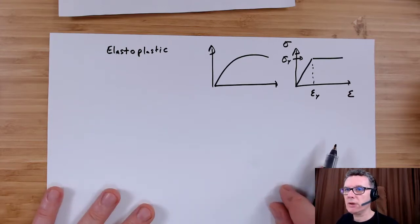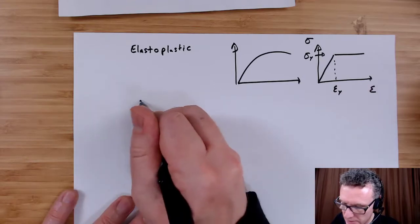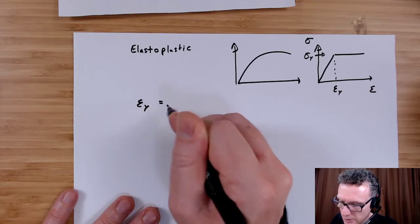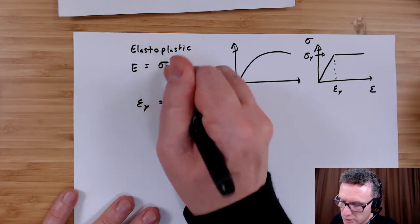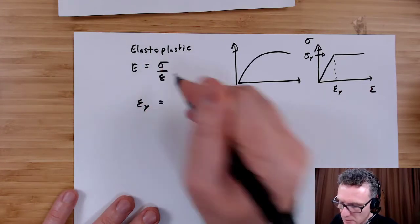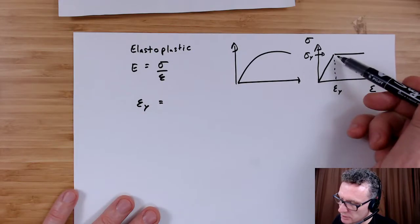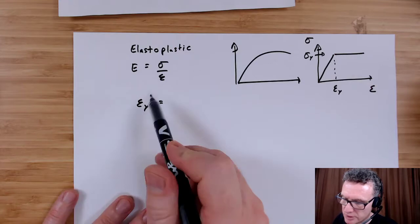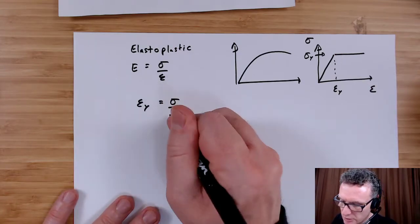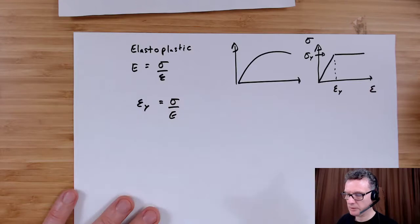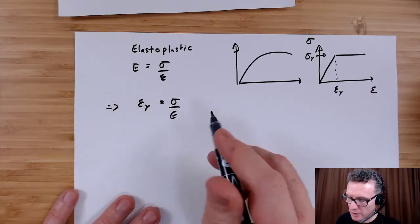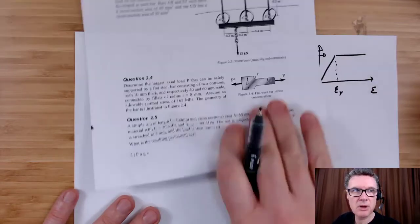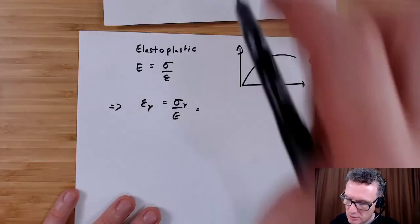Alright, so let's work that out. Here all we're doing is Young's modulus is stress over strain. Notice that's going to be valid in this region; we're assuming a linear increase. So rearranged, this becomes strain is stress over Young's modulus.